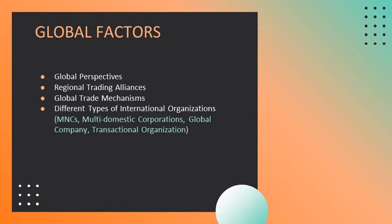There are different regional trading alliances and global trade mechanisms as part of the external environment. Examples of regional trading alliances are: European Union, NAFTA (North American Free Trade Agreement), CAFTA (Central American Free Trade Agreement), ASEAN (Association of Southeast Asian Nations), SARC (South Asian Association for Regional Cooperation), and the African Union. Examples of global trade mechanisms are: World Trade Organization, IMF (International Monetary Fund), World Bank, and OECD (Organisation for Economic Cooperation and Development).